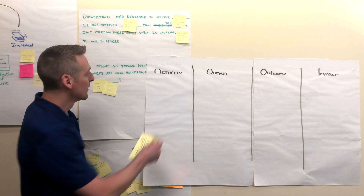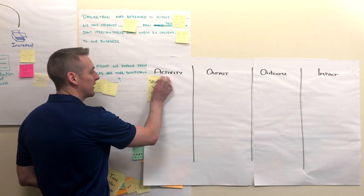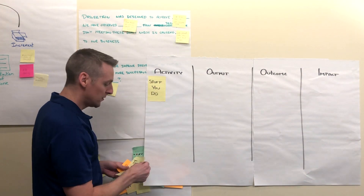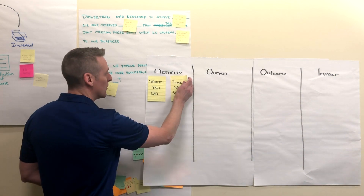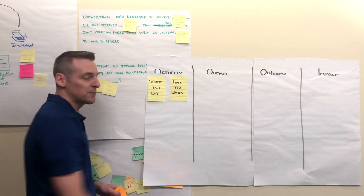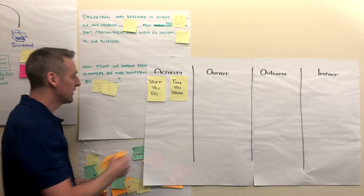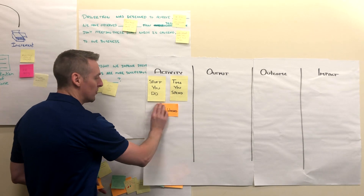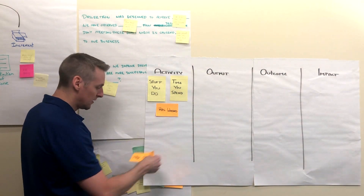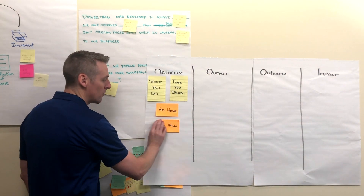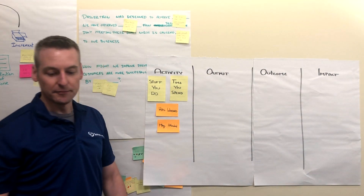Activity is something more like stuff you do, or time you spend on something. A few examples might be hours you worked, or meetings you attended.